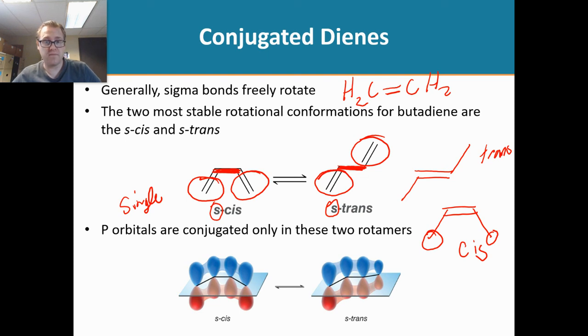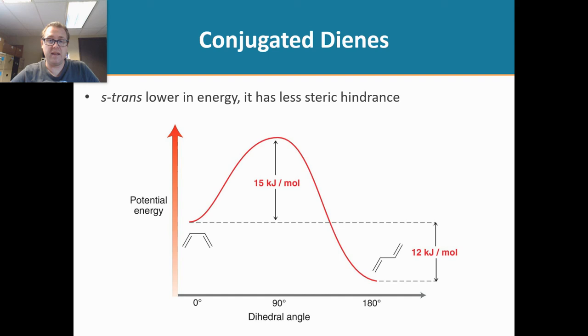Now these two conformers, or also we call them rotomers, it doesn't matter if it's in the s-cis or in the s-trans, you're still going to have conjugation. Now between those two conformers, we see there's going to be some equilibrium here. Because they can shift between this s-cis and the s-trans. And the energy associated with going from the s-cis to the s-trans, it's going to go through this transition state of 15 kilojoules per mole.